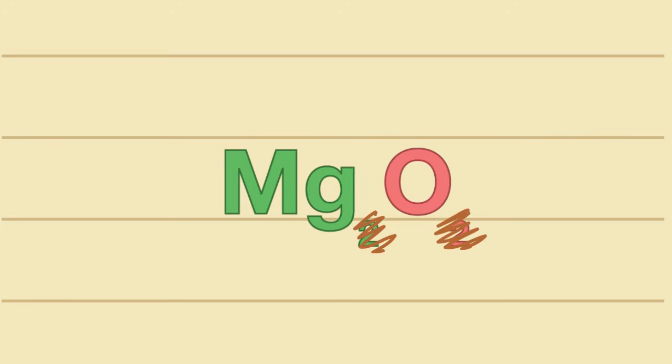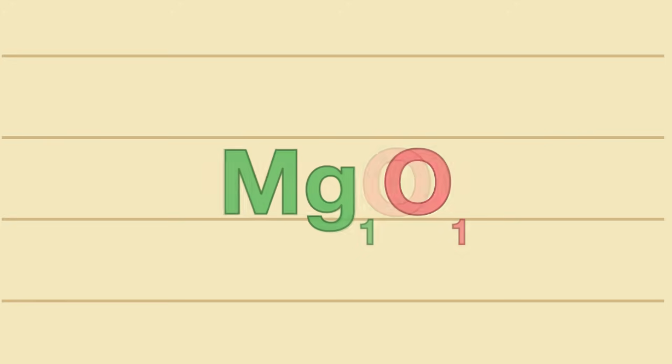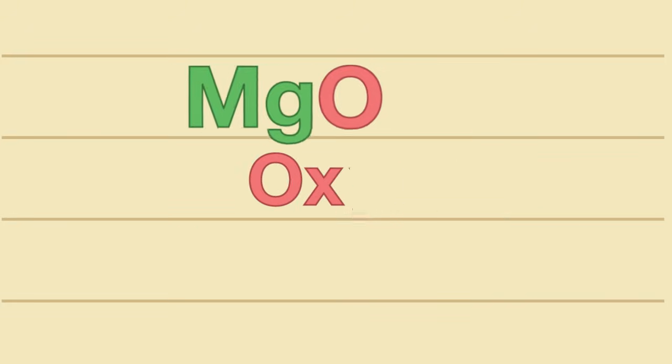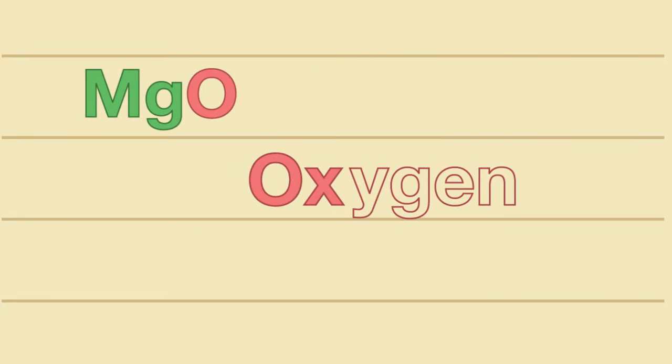However, 2 to 2 can be reduced to 1 to 1. Therefore the formula is MgO. The name of this compound is magnesium oxide. Remember that we keep the first syllable and we change the ending to an '-ide'.